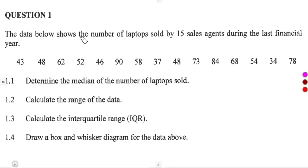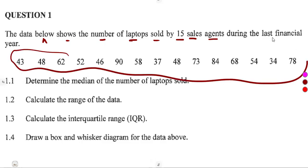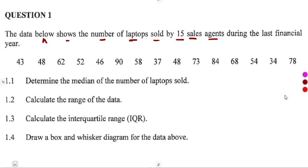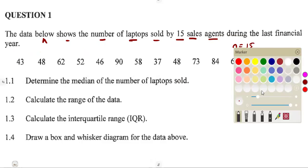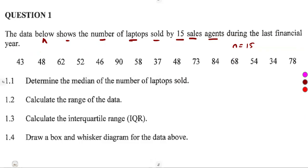From the given question, we have data showing the number of laptops sold by 15 sales agents during the last financial year. That is the information we are given. So n is equal to 15 — the number of terms we are given from the data.